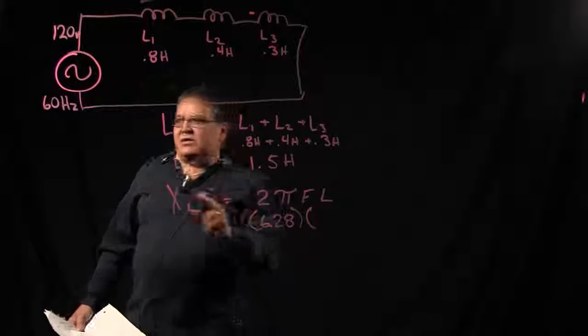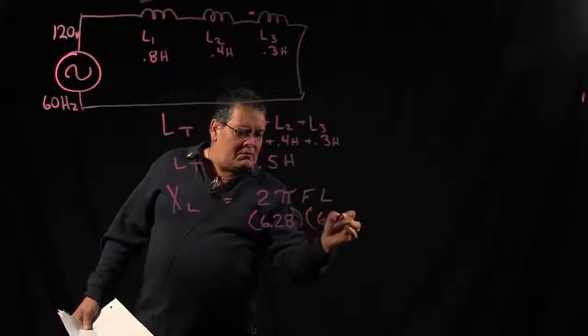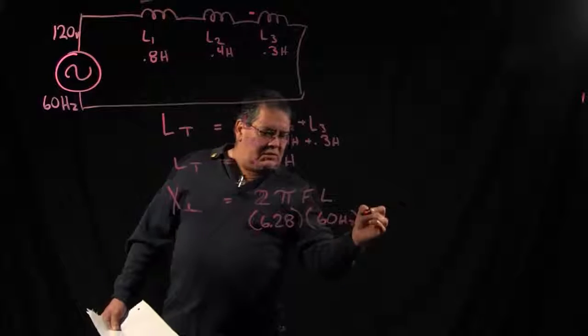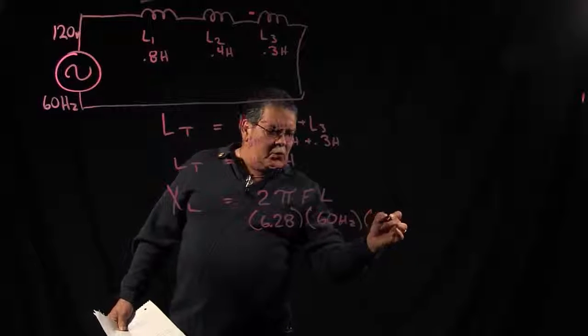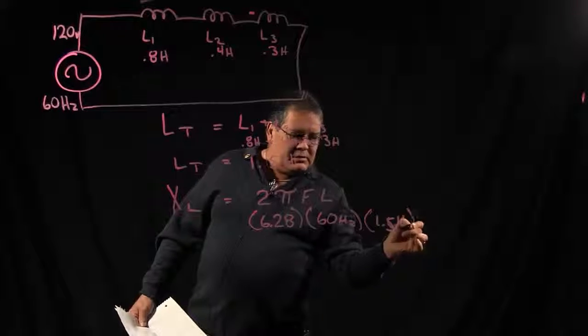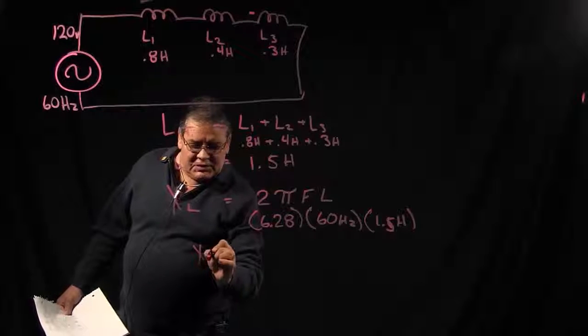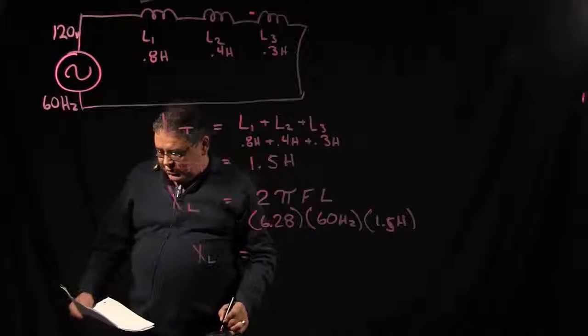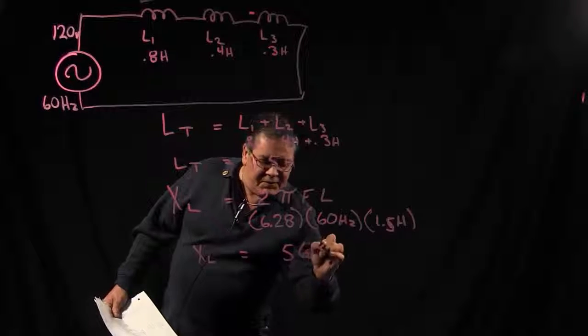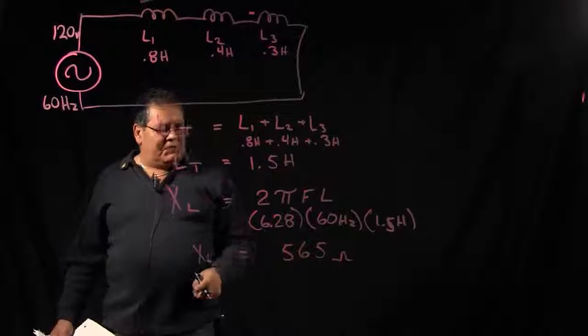And then we're going to multiply that times our frequency of 60 hertz and times our inductance of 1.5 henries. So our inductive reactance will total 565 ohms. Now inductive reactance is always measured in ohms, much like resistance.